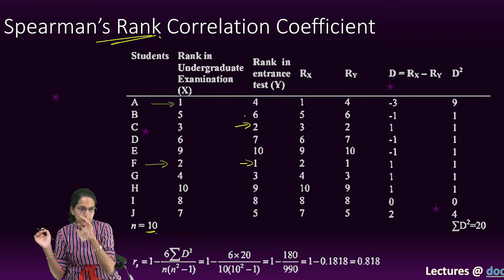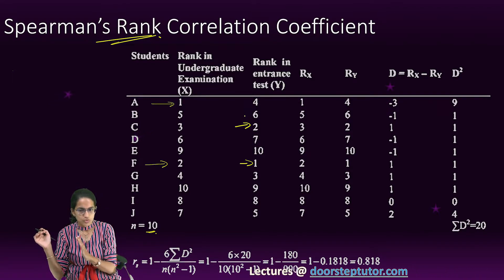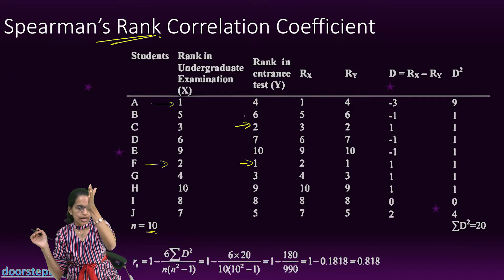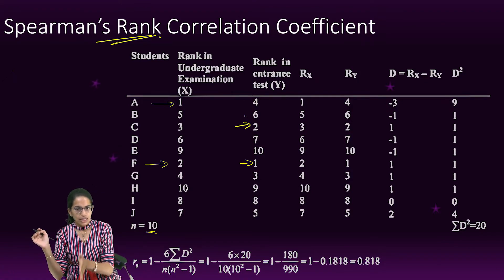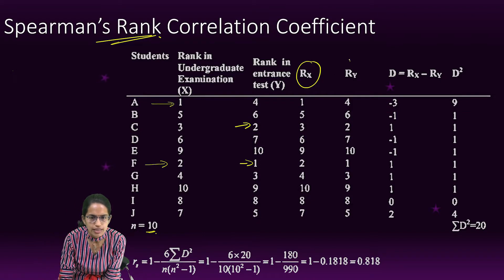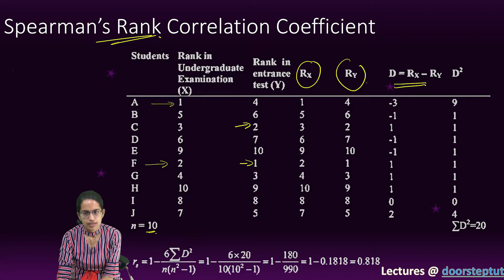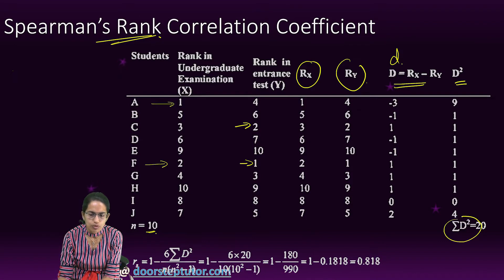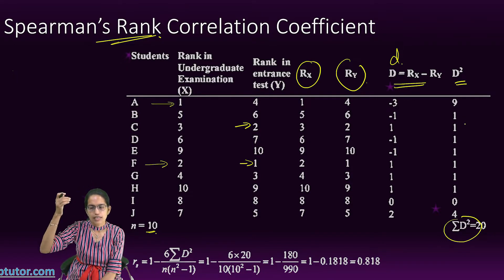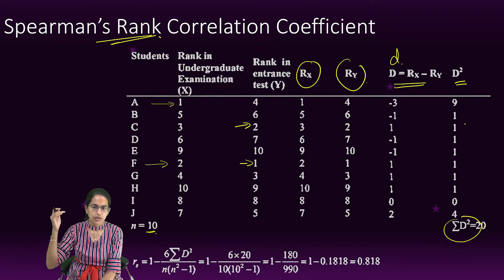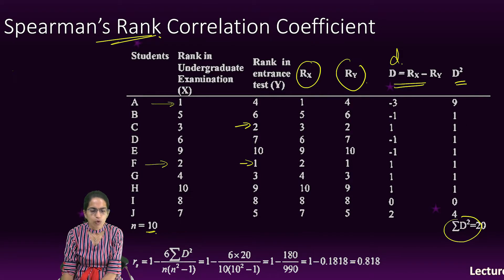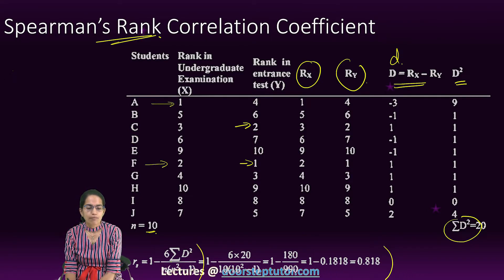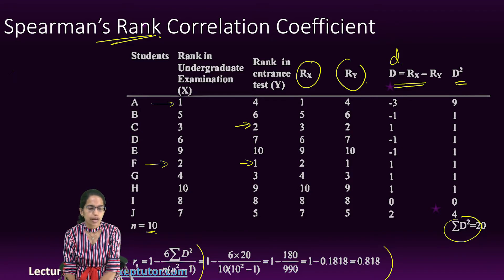In rank-order correlation, we have the rankings for each of the 10 students. The ranks by judge one are denoted as Rx and by the second judge as Ry. I find the difference of the ranks, denoted by d, then square the difference, and sum up those squares. The squared differences came out as 9, 1, 1, 1, 1, 1, 1, 0, 4 — and I add all of these up. The formula for Spearman rank-order correlation is: 1 minus 6 times summation of d-squared, divided by n(n²-1).